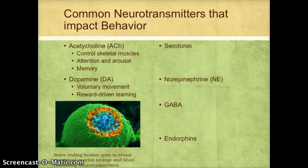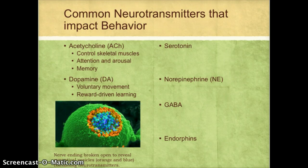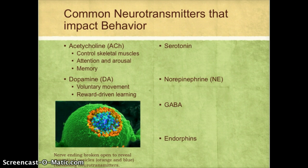Dopamine controls voluntary movement, so it also plays a role when I tell my arm to raise up and put down. What's really interesting in psychology is the role dopamine plays in reward-driven learning — whenever you are rewarded, you get a flood of dopamine, most often in the prefrontal cortex. We find this stimulation fabulous and wonderful, so most addictive drugs work in part by stimulating dopamine, which is part of what makes those drugs addictive.